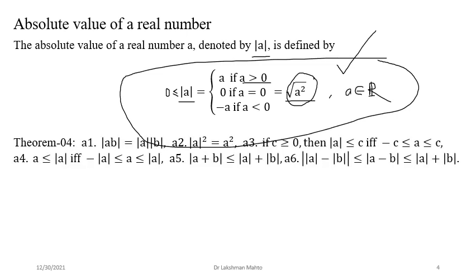A few results follow from the definition. Result A1: |ab| = |a|·|b| — the modulus of a product equals the product of the moduli. Result A2: |a|² = a² — if you square the absolute value of a real number, you get the square of that real number itself. This is very interesting and useful, for example when finding the domain and range of a function.